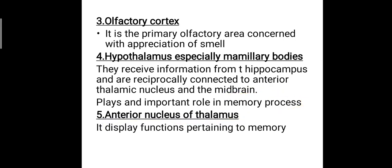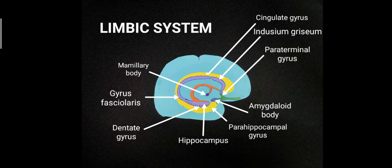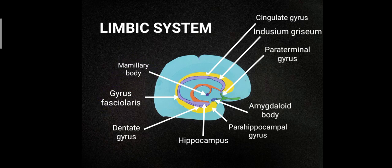The anterior nucleus of the thalamus displays functions pertaining to memory. Reviewing the diagram, we can identify: the cingulate gyrus, the indusium griseum, the paraterminal gyrus as part of the septal area, the amygdaloid body, the parahippocampal gyrus, the hippocampus, the dentate gyrus, the gyrus fasciolaris, the mammillary bodies, and the olfactory bulb.